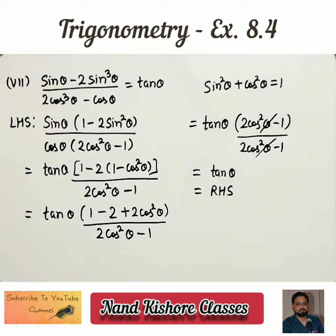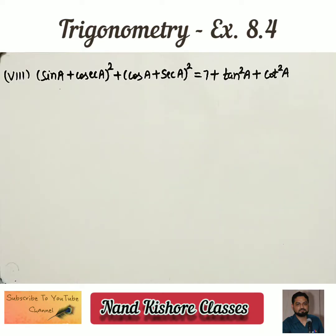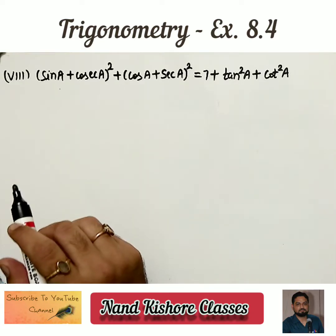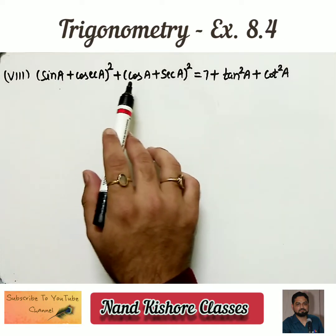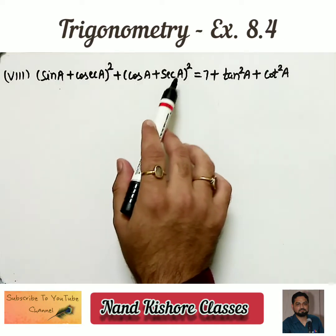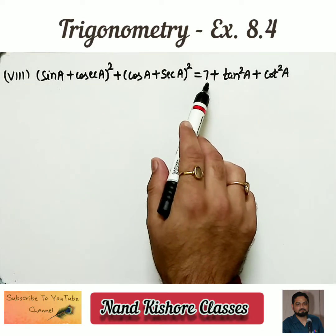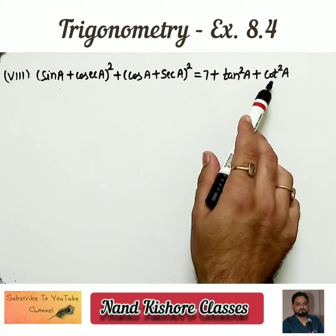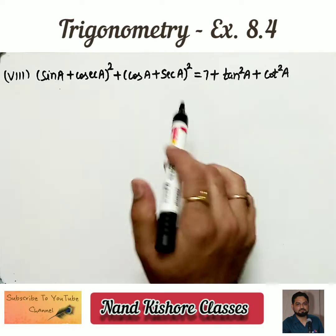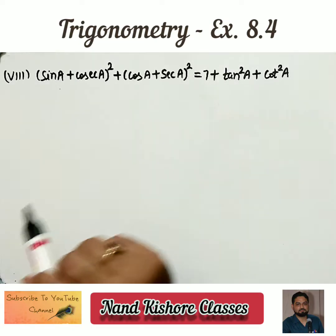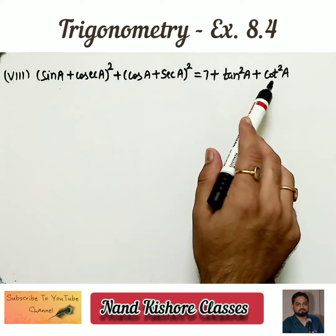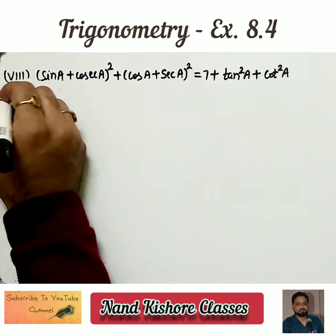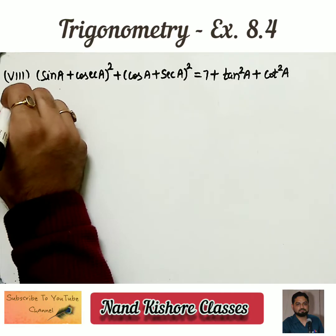Let's move to the next part. Look at the statement on your screen — we need to prove: (sin a plus cosecant a)² plus (cos a plus secant a)² equals 7 plus tan square a plus cotangent square a. The left side contains sine and cosine terms, the right side contains tangents and cotangents.